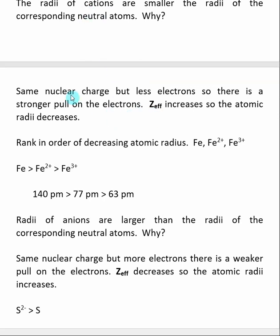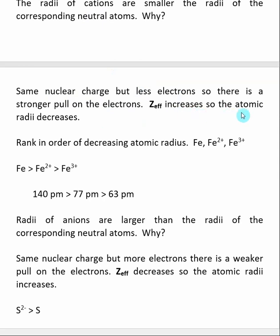When we're making a cation, the nuclear charge stays the same — the number of protons stays the same — but we are removing electrons. Now that there are fewer electrons, there's a stronger pull between the nucleus and the electrons. So when we make a cation, Z-effective actually increases, and as Z-effective increases, the atomic radius decreases. The radii of cations are smaller than the radii of the corresponding neutral atoms.